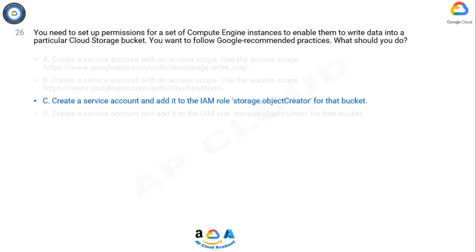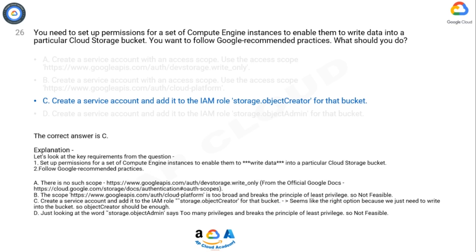Option B: The scope https://www.googleapis.com/auth/cloud-platform is too broad and breaks the principle of least privilege, so this is not feasible. Option C: Create a service account and add it to the IAM role Storage Object Creator for that bucket — this is the right option because we just need to write into the bucket, so Object Creator should be enough. Option D: Storage Object Admin grants too many privileges and breaks the principle of least privilege, so it is not feasible.